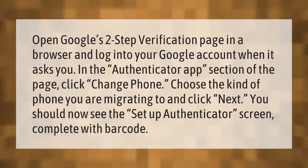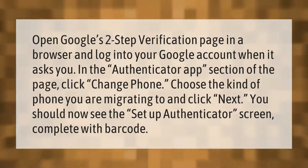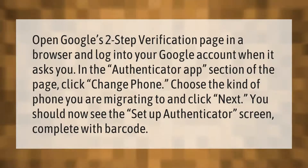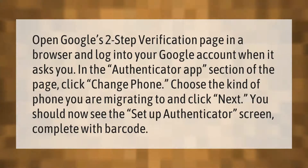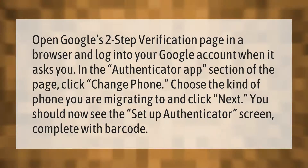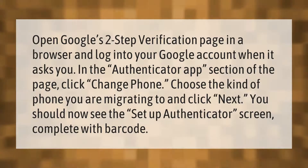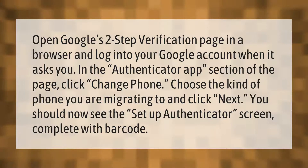Open Google's two-step verification page in a browser and log into your Google account. In the Authenticator App section of the page, click 'Change Phone.' Choose the kind of phone you are migrating to and click Next. You should now see the Setup Authenticator screen, complete with barcode.